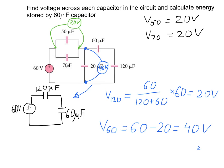Moving to the second group: the 40 volts is the voltage across this group, and it is also the voltage across the 20 microfarad capacitor. So the voltage across the 20 microfarad capacitor is 40 volts. We only have two capacitors left — 60 and 120 microfarads — and this 40 volts is shared between these two capacitors connected in series.